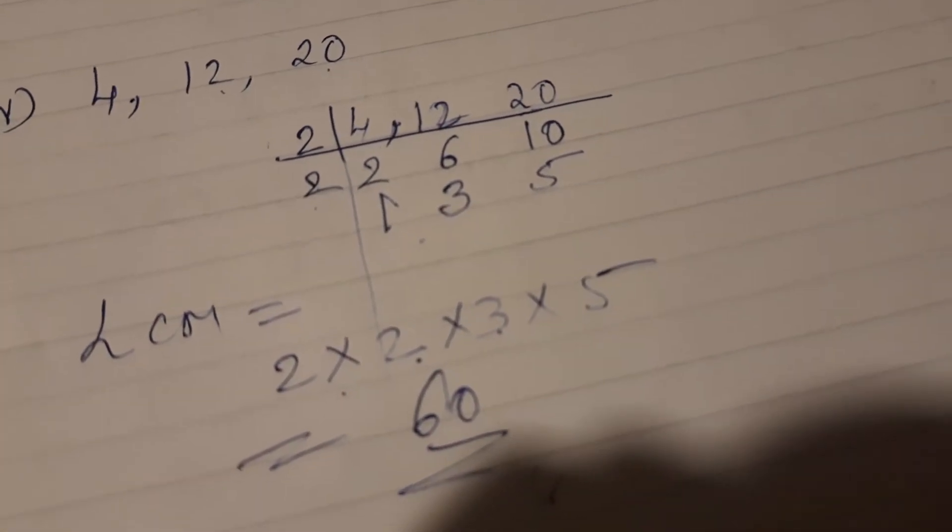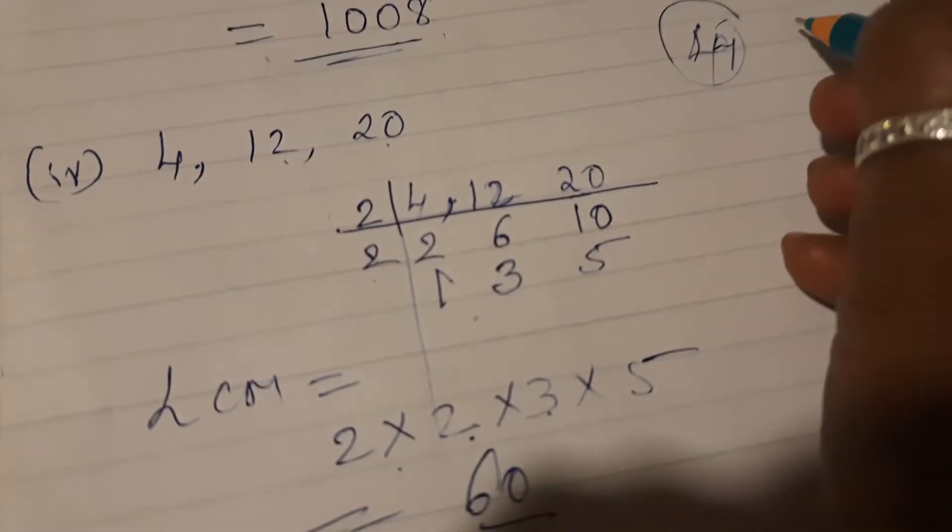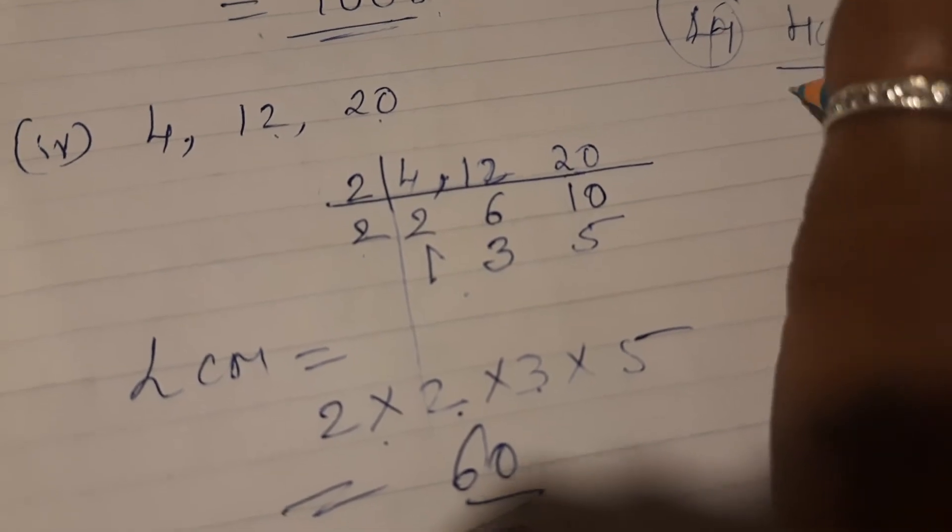That means LCM of 4, 12, and 20 is 60. Now fourth sum you will have to do it as homework. Fourth sum will be homework.